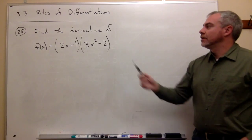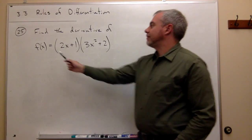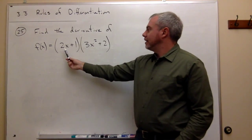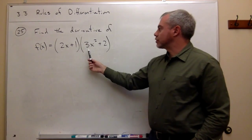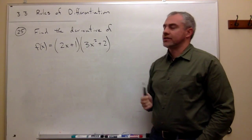In number 25, we want to find the derivative of f(x) equals quantity 2x plus 1 times quantity 3x squared plus 2.